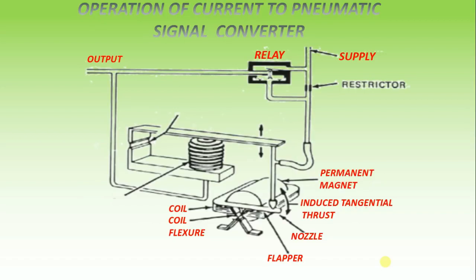This pressure is fed to a feedback bellows which exerts a force on a feedback flexure to move the nozzle and establish a throttling relationship between the flapper and the nozzle, thus producing the output pressure according to the input milliamps.